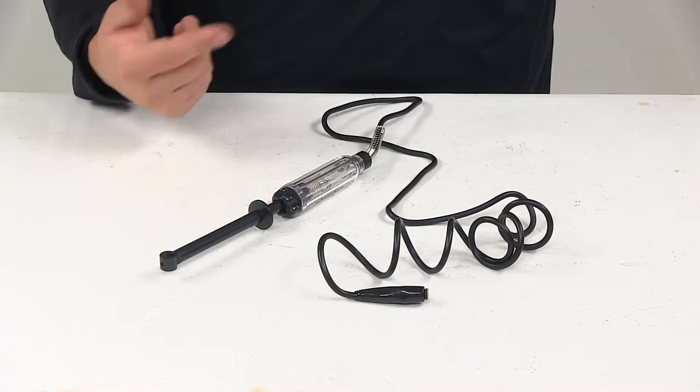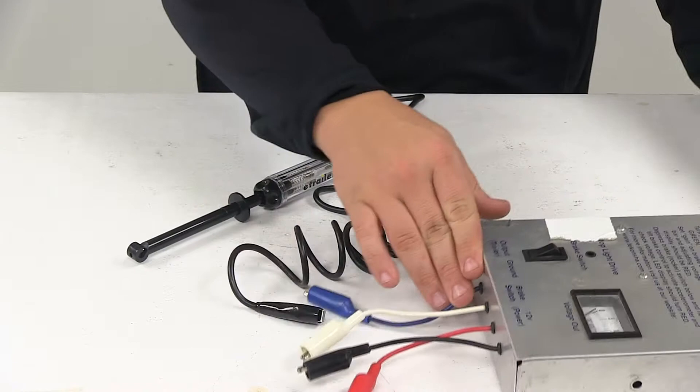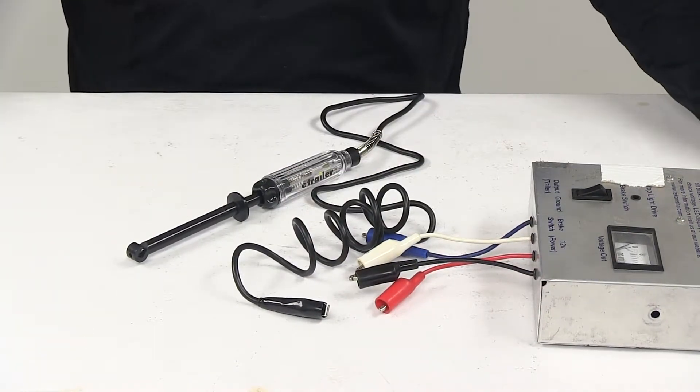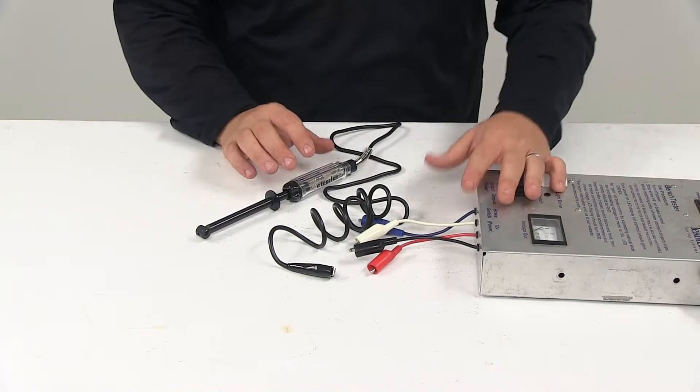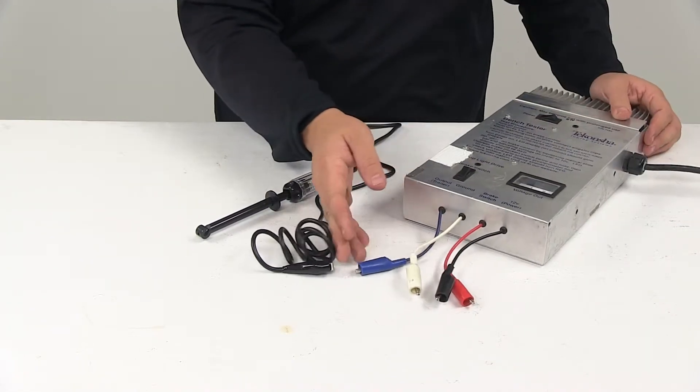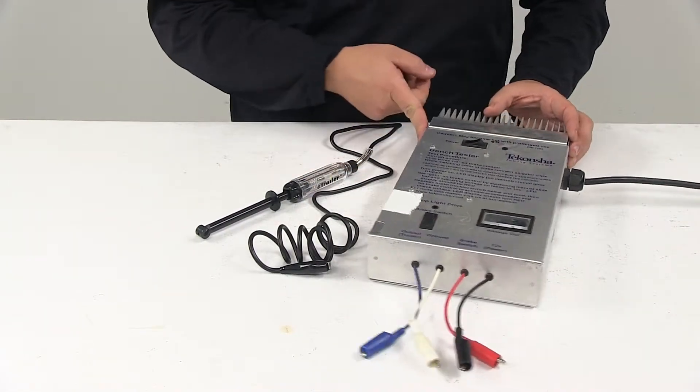I'm going to go ahead and show you how to use it. I have a power box here. So let me zoom out so you can see exactly everything that I'm doing. I just have a power box that we use mostly for testing lights and trailer wiring. So what I'm going to do is I'm going to turn that on.